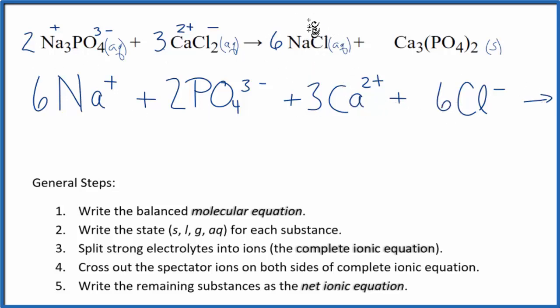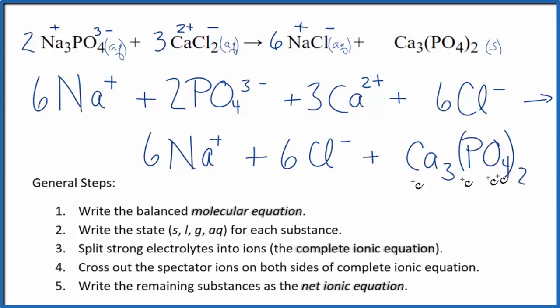The products, we have the NaCl, plus and a minus. So we have Na plus, we have six sodium ions, plus six chloride ions. And then the calcium phosphate has a solid. So in net ionic equations, we don't split solids apart. So we're just going to write Ca3(PO4)2. So these are the products.